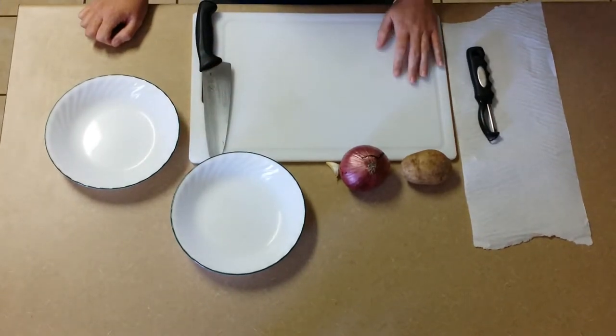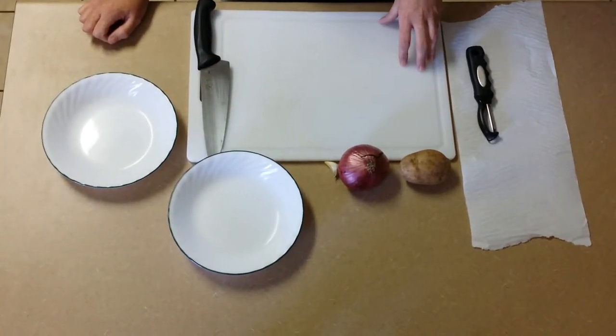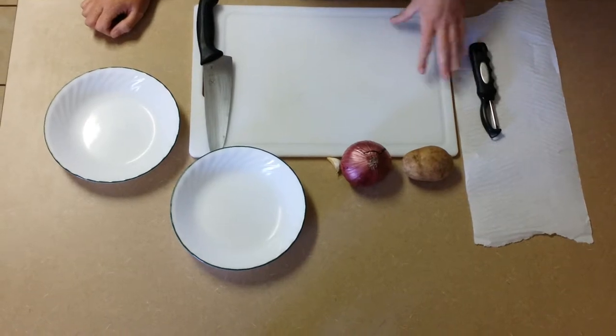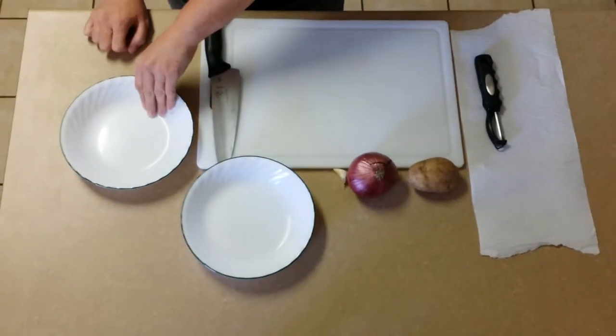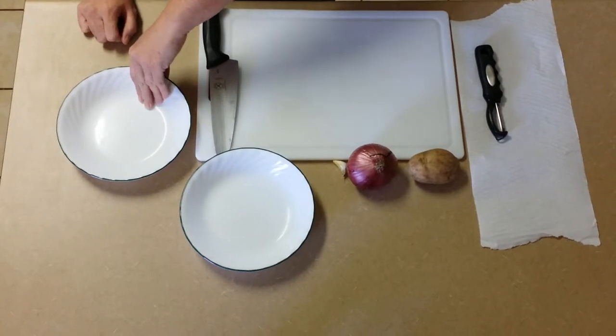Whenever you work on the cutting board, your cutting board should be cleaned at all times except for the item that you are cutting. So we want this area to remain clean. I have a bowl for waste and I have a bowl for my actual vegetable that I'm going to end up using.